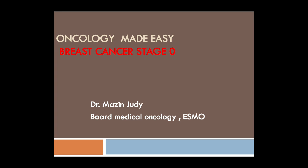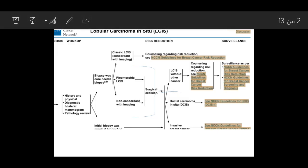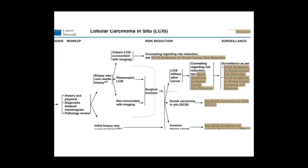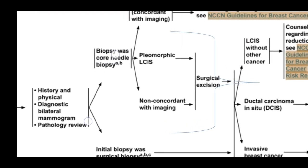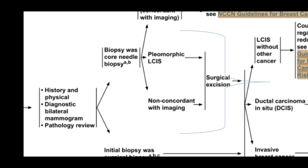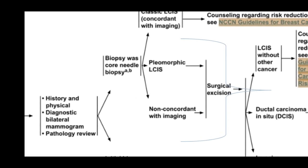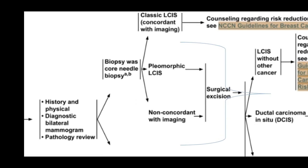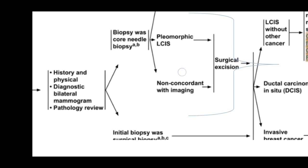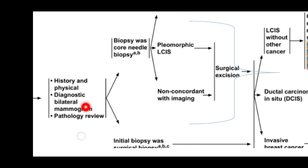When there is a mass in the breast, after history we have to do physical examination and then use imaging tests to diagnose whether the mass carries a risk of malignancy. Imaging is either ultrasound or mammography. If the patient's age is below 30 years, it is better to use ultrasonography; if the age is more than 40 years, we have to do bilateral mammography. If the diagnosis is in situ cancer, we have to do a very important step: pathology review.